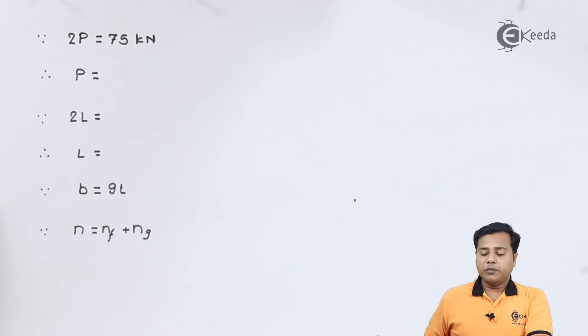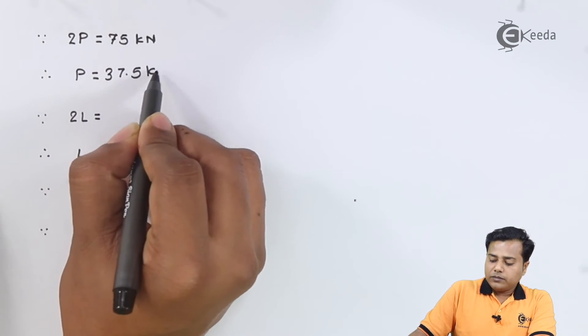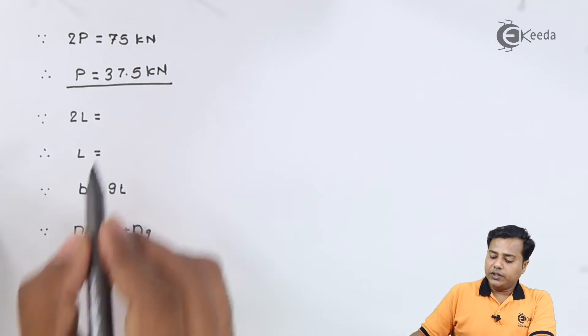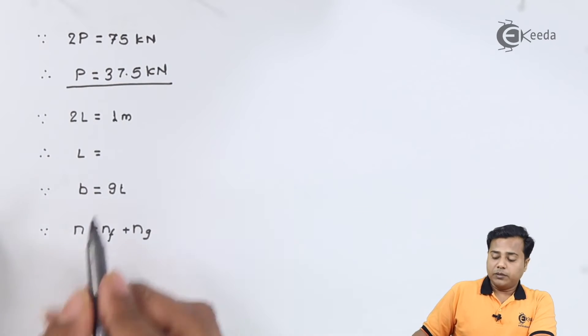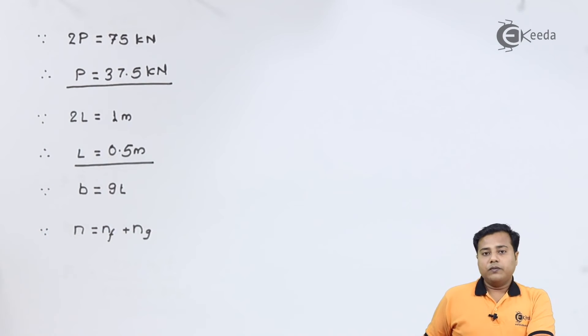So let us quickly summarize the values. Twice the P value is given 75 kN, so that makes P equal to 37.5 kN. L2 is mentioned 1 meter, so that becomes 0.5 meter.